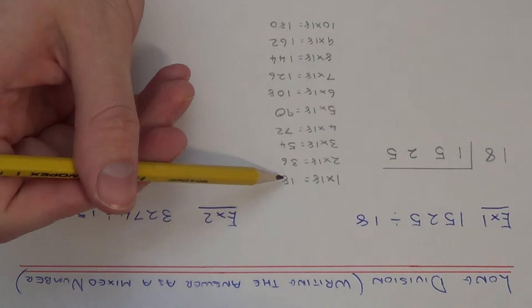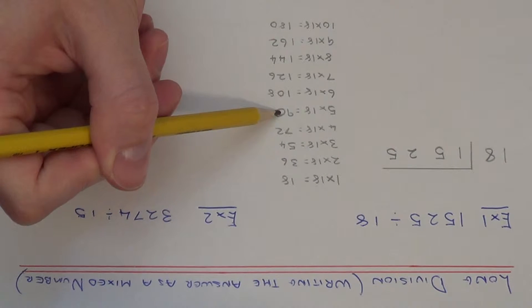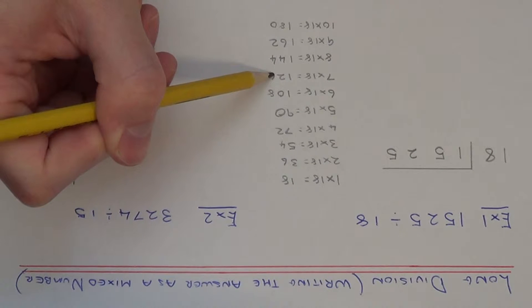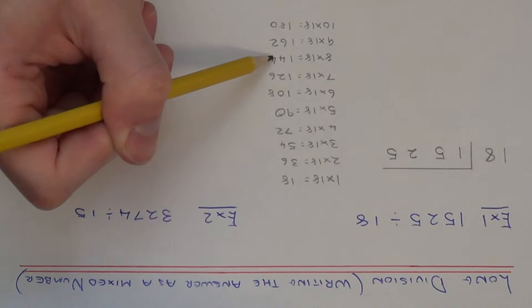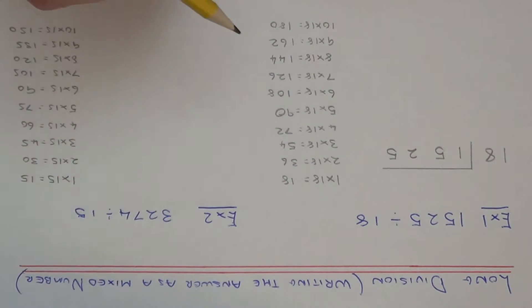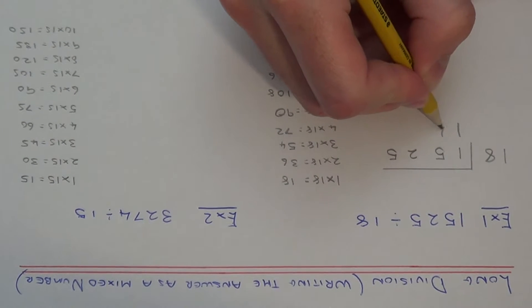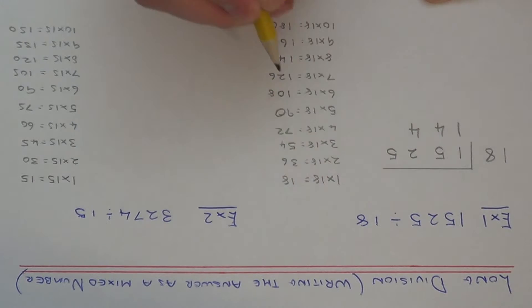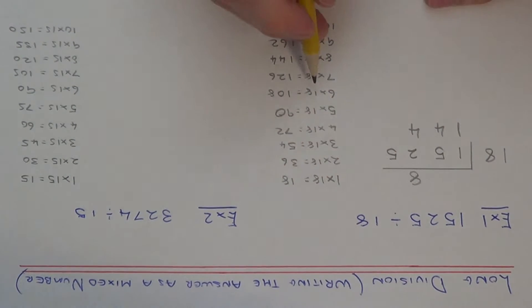Go through your multiples of 18 until we find our best multiple. We don't want to go past 152. So 18, 36, 54, 72, 90, 108, 126, 144, 162. 162 is too big, so I'm going to stop on 144. So that's our best multiple to take off. Write that down underneath the 152, and that was 8 times 18, so we put the 8 on the top line.